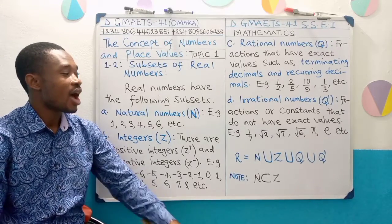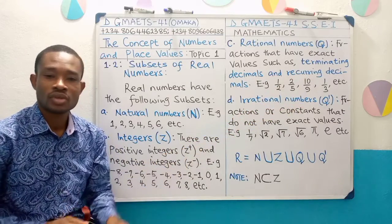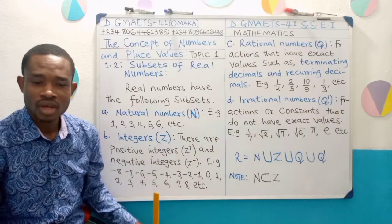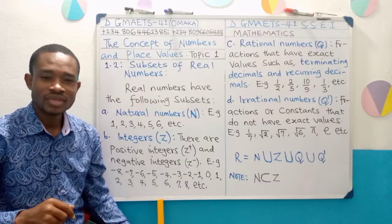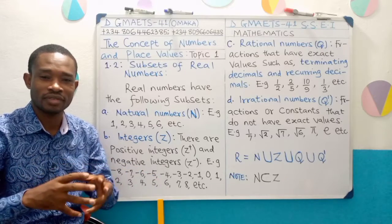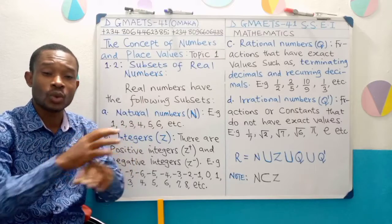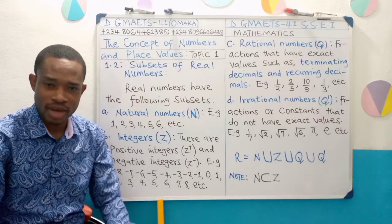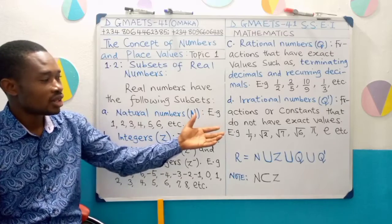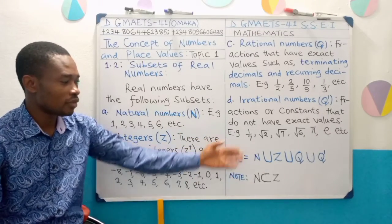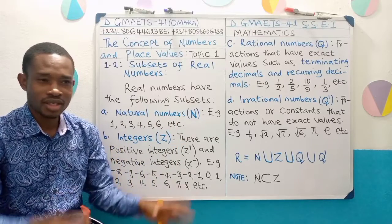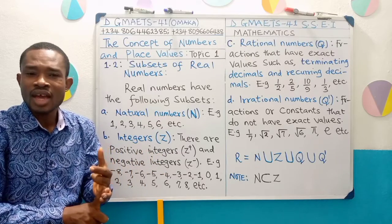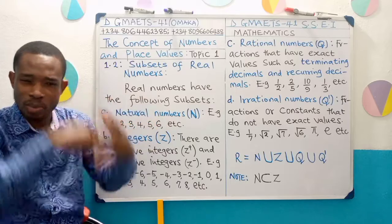The next subset we refer to as irrational numbers, represented by Q'. These are fractions that when you evaluate them, the value is quite scattered — it will not give you a definite pattern and will not have an exact value. Such fractions fall under irrational numbers. An example is 1 over 7 — you will notice the decimal is not arranged, it is not terminating, and it does not show a particular pattern of recurrence.